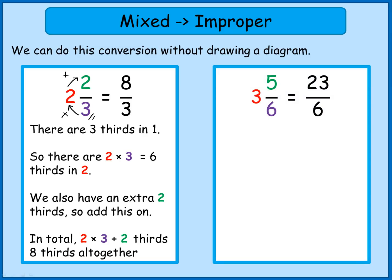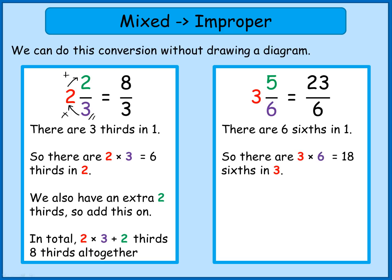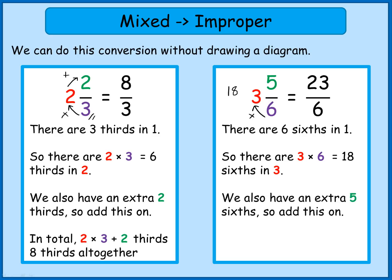Let me show you that 3 and 5 sixths is the same as 23 over 6. Same reasoning: there are 6 sixths in one, so in 3 whole ones I'm going to have 3 lots of 6, which is 18 sixths altogether. I'm multiplying the denominator by the whole number part to get how many sixths are in the whole number part. I've then got 5 extra sixths from the numerator, so adding that to 18 gives 23 sixths altogether.